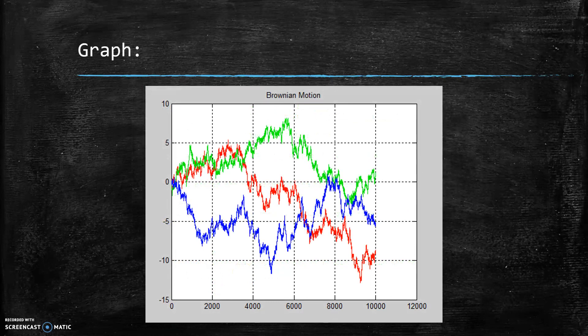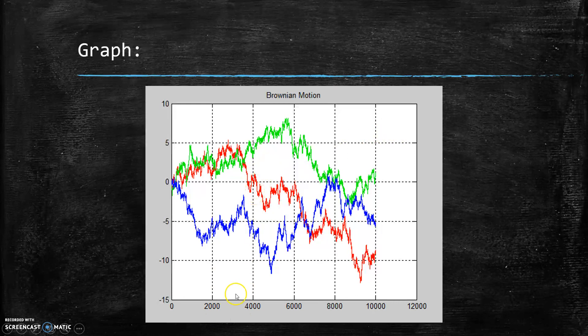So here's our simulated Brownian motion. Here are different. The colors represent our three different particles. And as you can see, they all kind of randomly did different things.